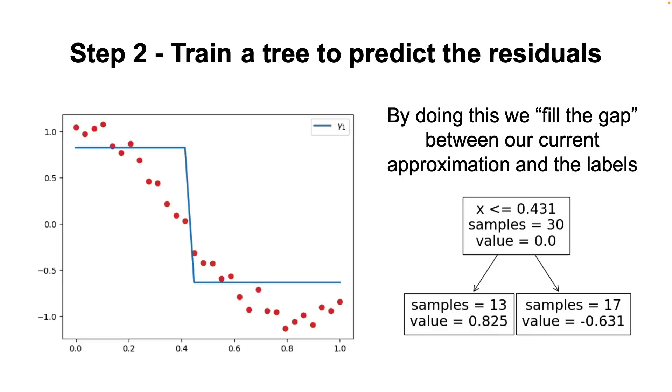Then, we train a weak learner, our shallow tree, to predict the residuals. By doing this, we try to fill the gap between our current approximation f0 and the target labels.